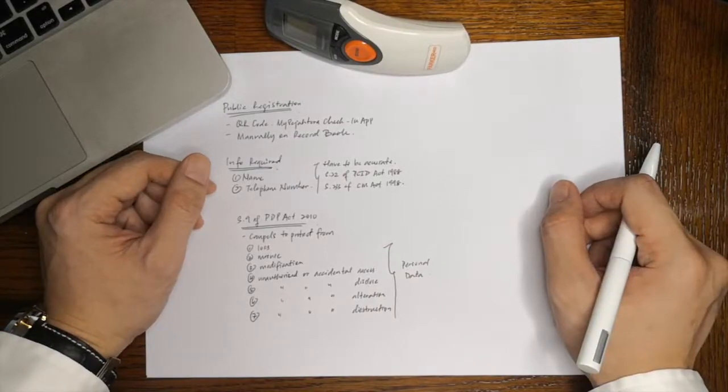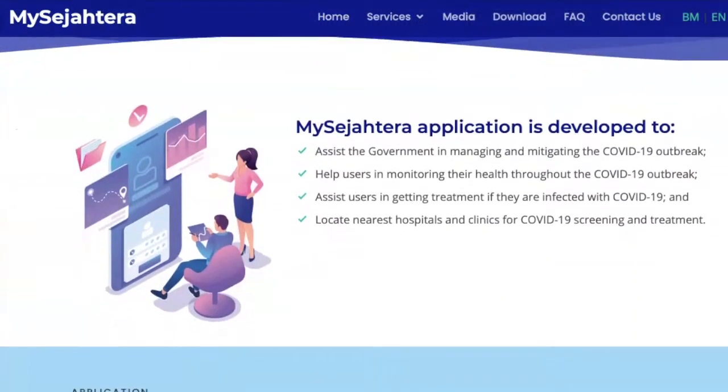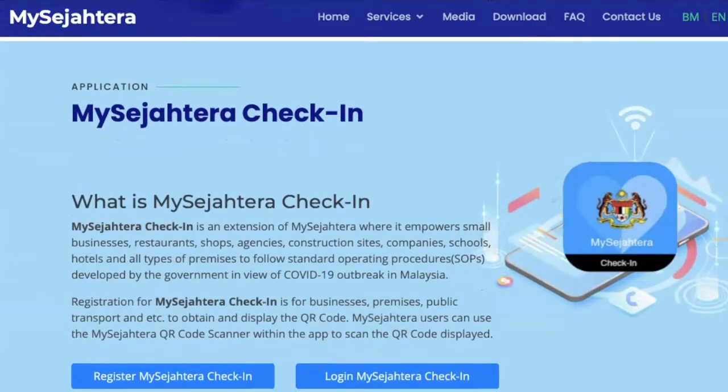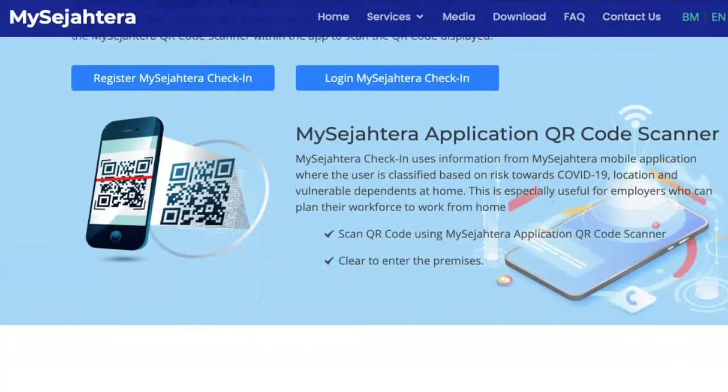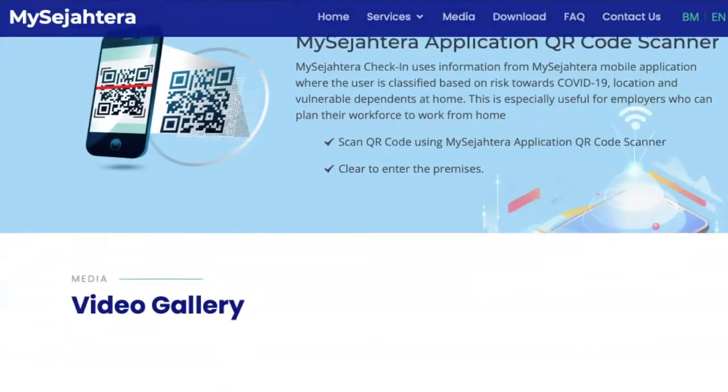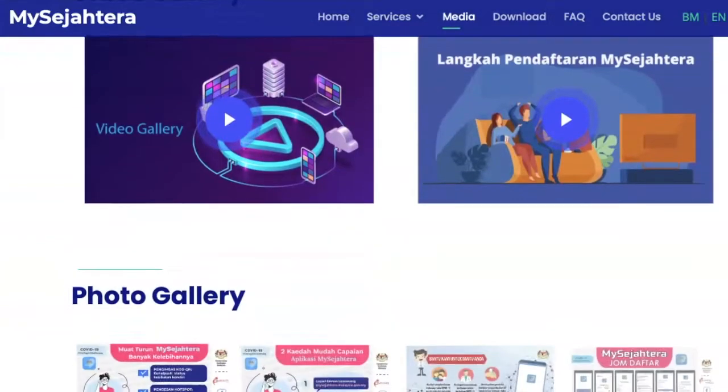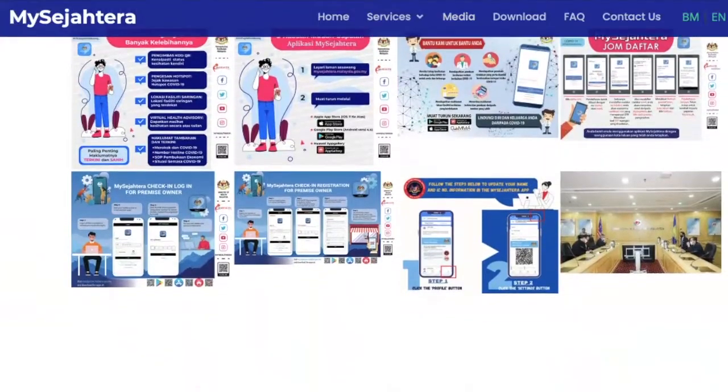Anyway, the MySejahtera check-in application is owned and operated by the government of Malaysia. The government assures that any personal information will only be used for the purpose of managing and mitigating the COVID-19 outbreak. The government also assures that it will not share your information to any party and such information is stored for 90 days and will be purged thereafter.